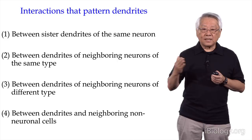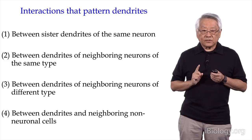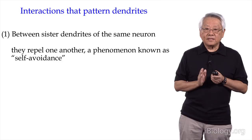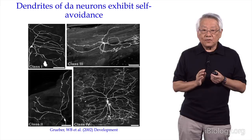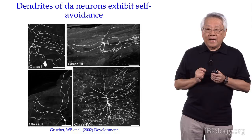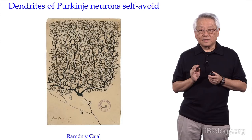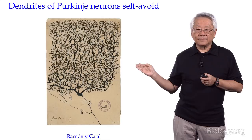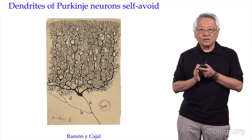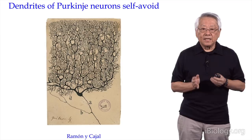The first dendritic interaction is between sister dendrites of the same neuron — in general, they repel one another. This phenomenon is known as self-avoidance. All four classes of DA neurons show self-avoidance: if you look at the dendritic branches, they tend not to bundle together and they don't cross over. Self-avoidance seems to be a general property of most, if not all, neurons. If you look at Cajal's drawing of the Purkinje cell closely, the dendritic branches also show self-avoidance — they don't cross over and they don't bundle together. Presumably, self-avoidance allows the dendrite to spread out, which is what you want for the antenna of a neuron.